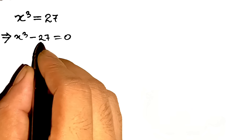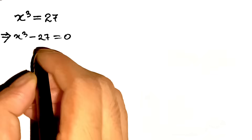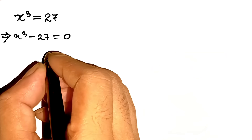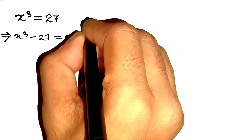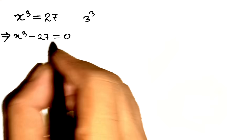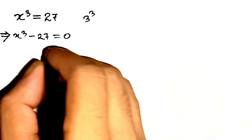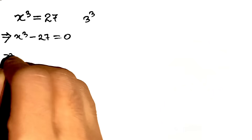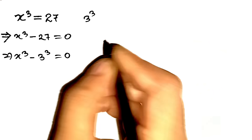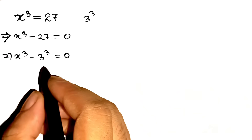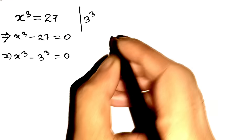Now let's take a closer look at x cubed minus 27 equals 0. Does anything jump out at you? 27 is 3 cubed, because 3 times 3 times 3 equals 27. So we can rewrite our equation as x cubed minus 3 cubed equals 0. This is like a neon sign flashing 'difference of cubes.' You ever come across that? It's like a secret weapon in algebra.